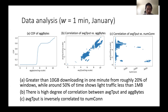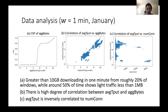As we can see, there is a high degree of correlation between those features. Figure C shows the correlation of average throughput and number of connections. This is inversely correlated, as we can see. It's not as strong as figure B, but we can still see some inverse correlation.